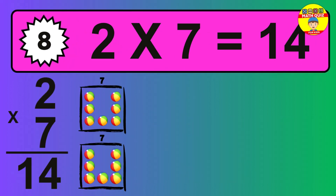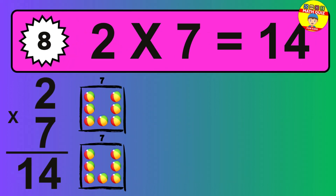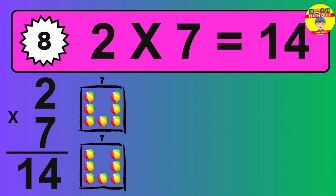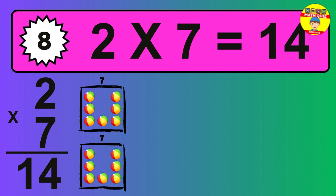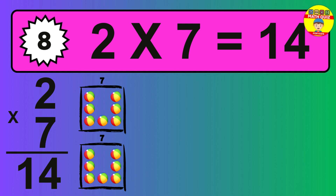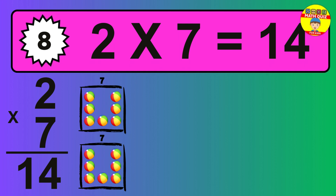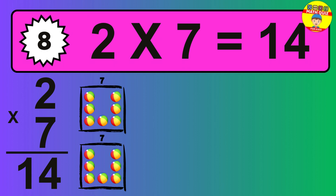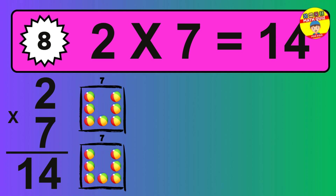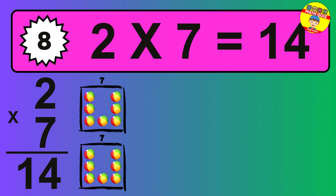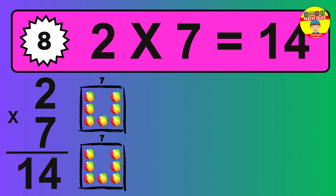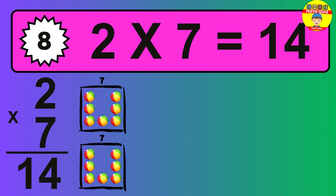The answer is two times seven is 14. To calculate, we have two groups with seven balls each one. So how many balls do we have? 14 balls.